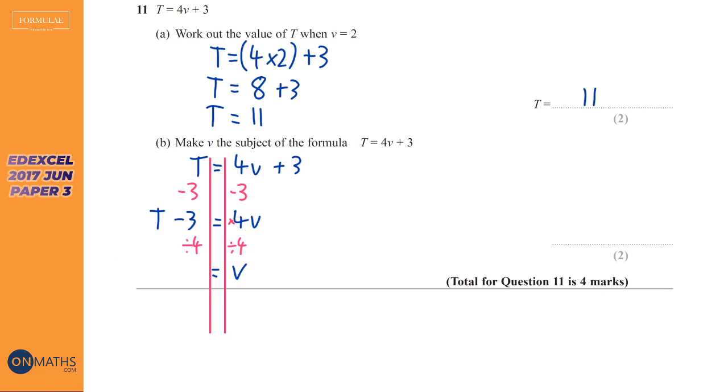When you divide a side by 4, you've got to divide the whole thing. So what I could do is put brackets around the T minus 3 and then divide by 4, but a much easier way of doing it is just putting it all over 4 like that. So our answer is v equals T minus 3 all over 4.